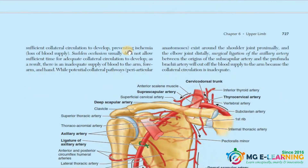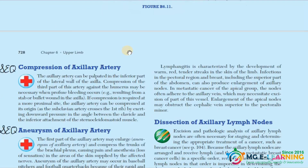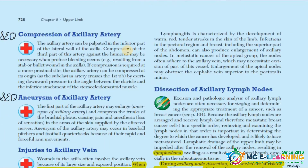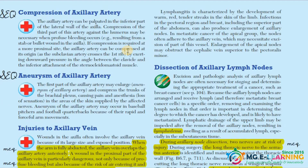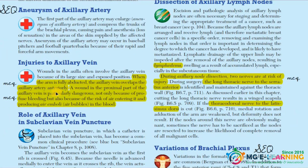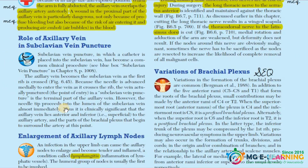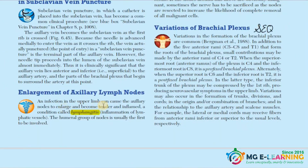After that, compression of the axillary artery is an SCQ — you need to memorize it. Aneurysm of the axillary artery is also an SCQ — also memorize it. Injuries to the axillary vein — read that. The MCQ is mentioned for you. Also read about the road of axillary veins in subclavian vein puncture.